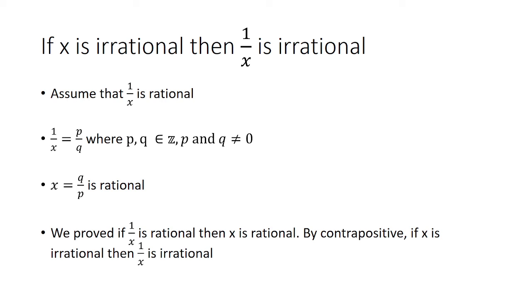So here we proved that if 1 over x is rational, then x is rational. By the contrapositive, if x is irrational, then 1 over x is irrational. And that completes the proof.